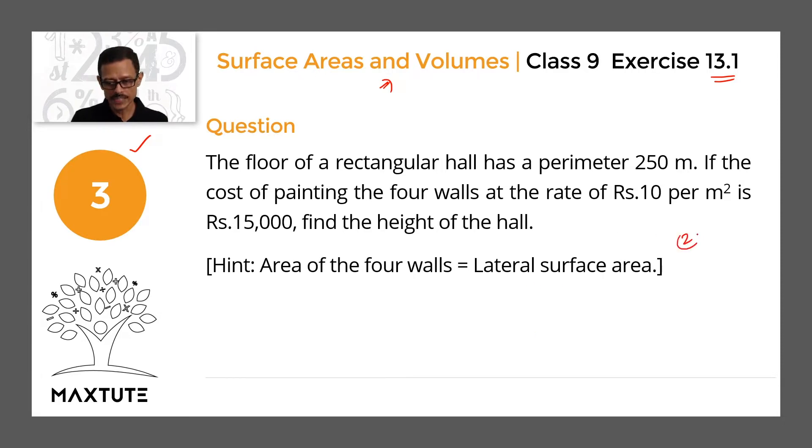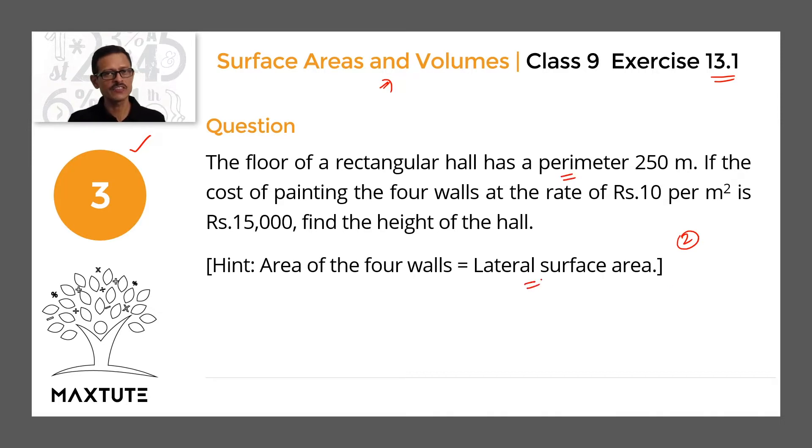We will need to use two formulae to solve this question: one, the perimeter of a rectangle, and second, the lateral surface area of a rectangular cuboid.